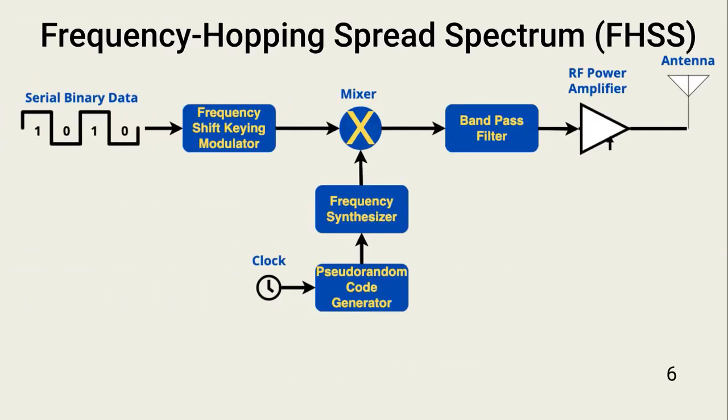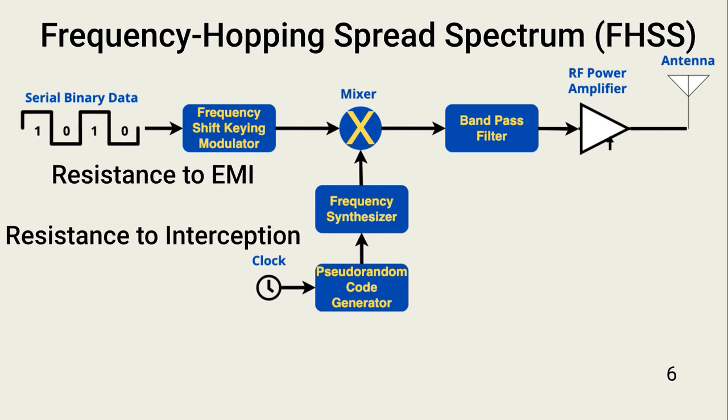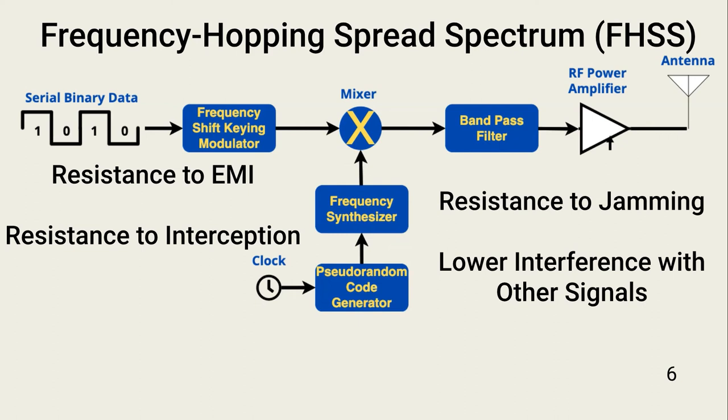Frequency-hopping spread-spectrum, or FHSS, rapidly changes the carrier frequency while transmitting messages. But instead of parallel transmission, FHSS sends packets in a series as it changes frequencies. Advantages of FHSS include resistance to signal interference, resistance to unwanted data interception, resistance to jamming, and less ability to interfere with other RF signals.